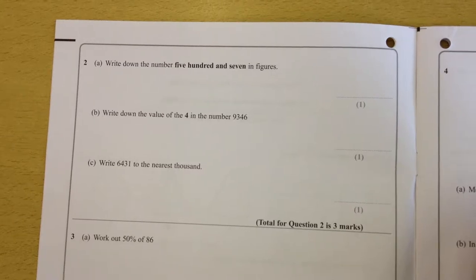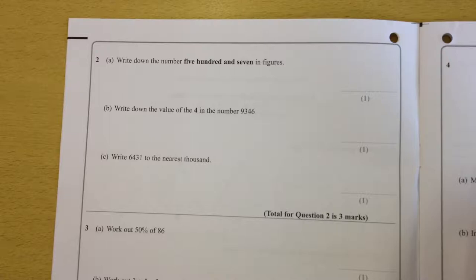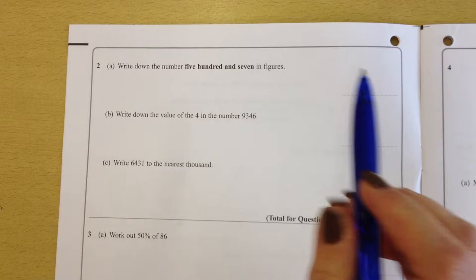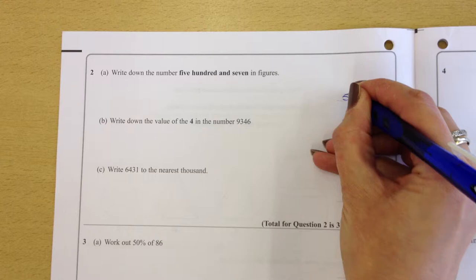OK, on to question number 2 then. Write down the number 507 in figures. Be careful with this, although it sounds very straightforward. Don't fall into the trap. It says 507, they've missed out the tens. So make sure you just write out 5, 0, 7.